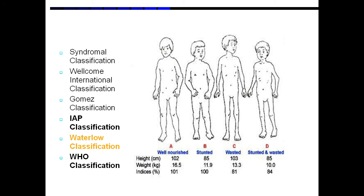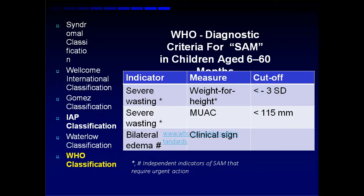Then comes Waterlow classification, divided into well-nourished, stunted, wasted, and stunted-and-wasted. In a well-nourished child everything is fine; in a stunted child, both height and weight are affected; in a wasted child, height is not affected but weight is; and in stunted-and-wasted, both are severely affected. Then comes WHO classification, based on mid-upper arm circumference and weight-for-height ratio less than three standard deviations, and clinical signs of bilateral edema.